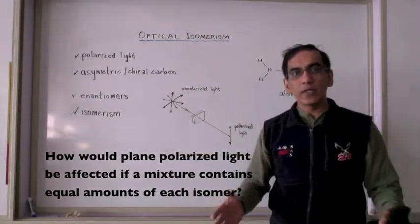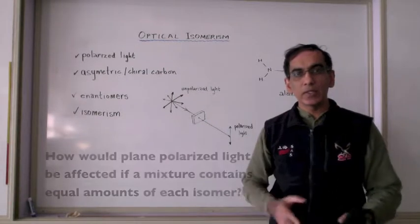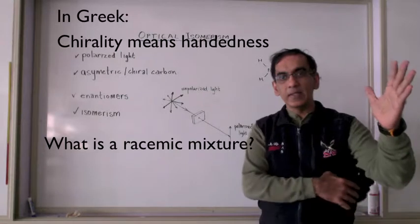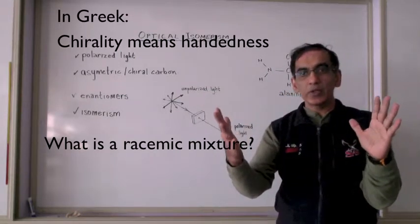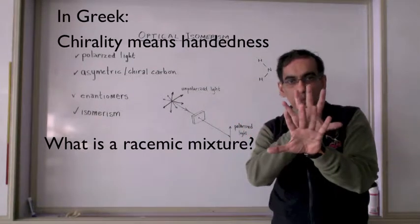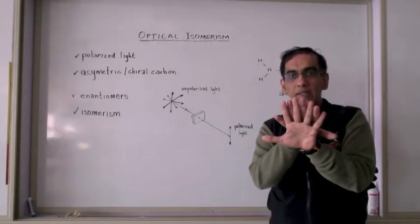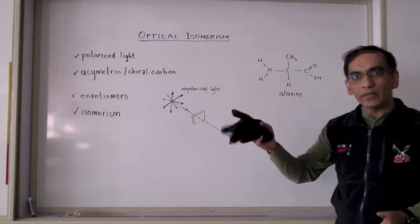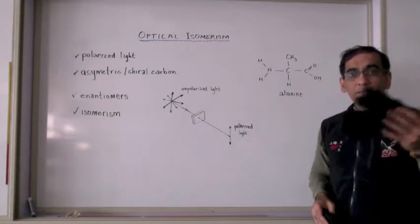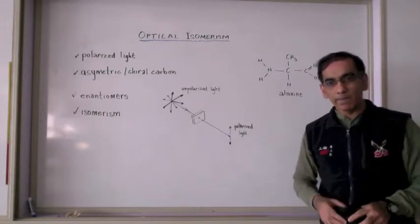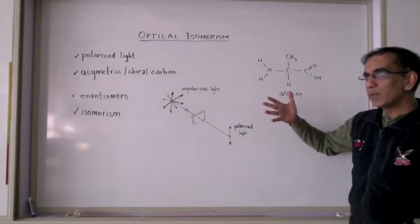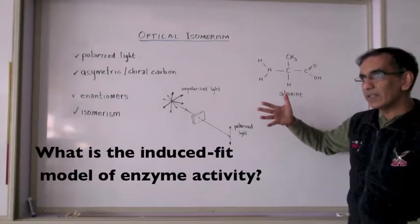Another easy way to understand mirror images and chirality is to take your hand and to hold it in front of its mirror image, your other hand. Is it possible to superimpose one hand over the next? So let's suppose my right glove represents one form of the amino acid alanine and my left glove represents the other form. Suppose this right hand represented the active site of an enzyme, and the amino acid alanine had to fit into this active site.